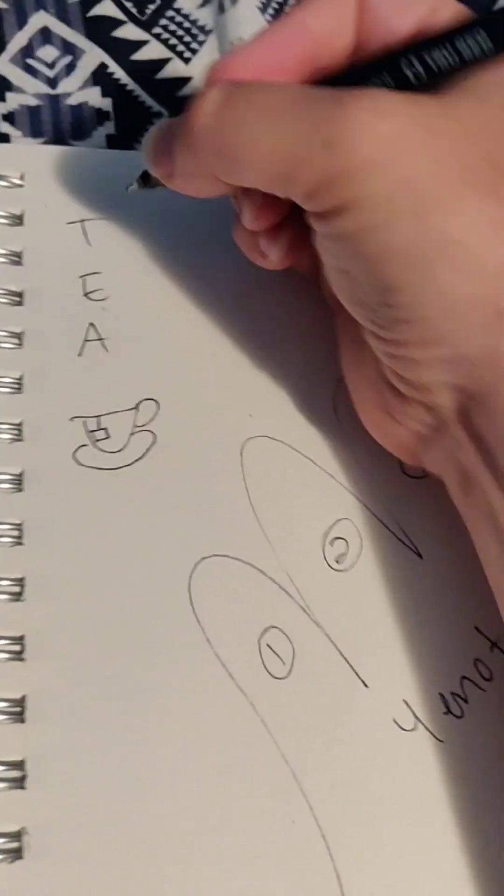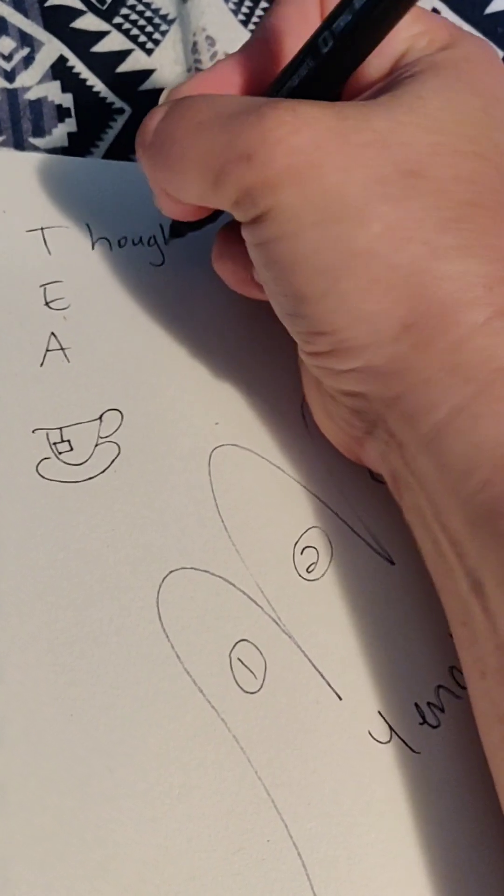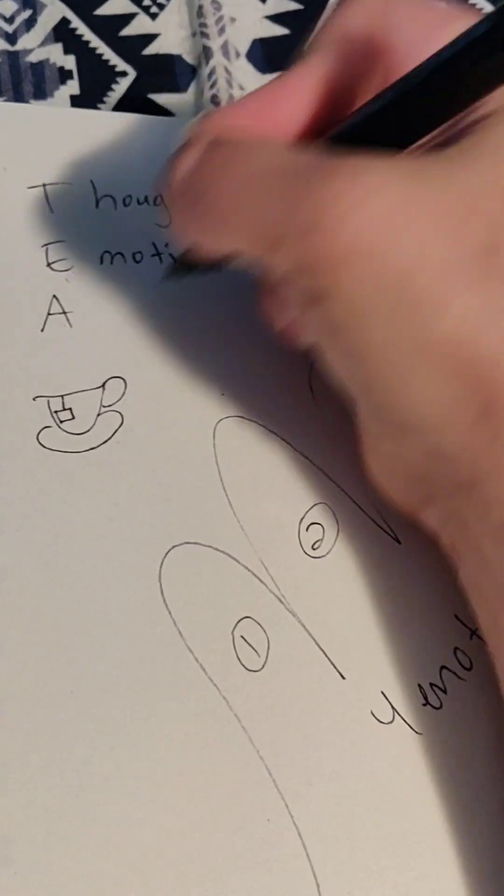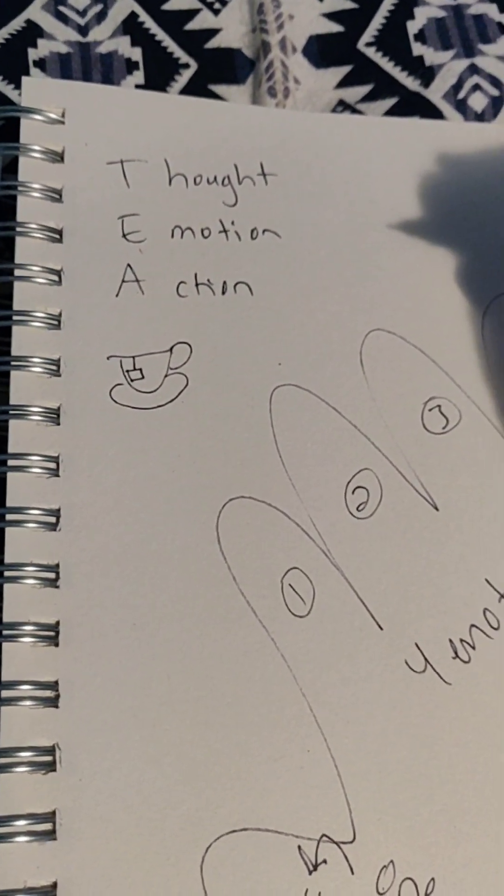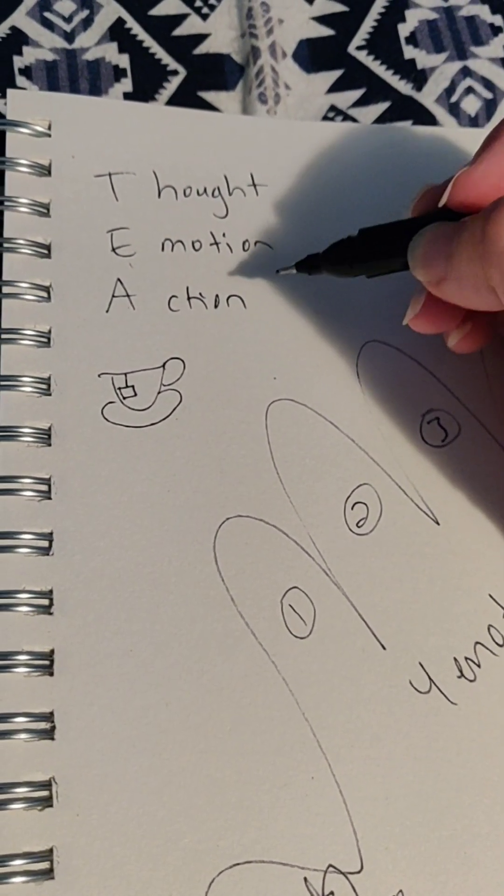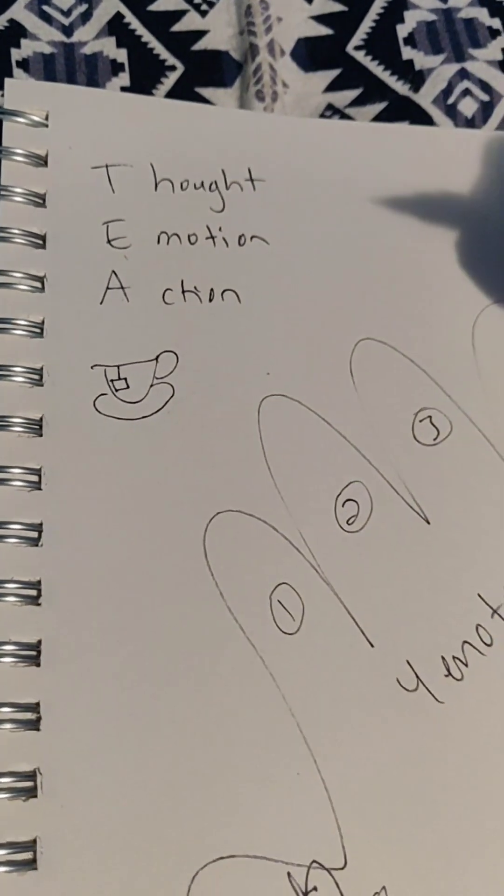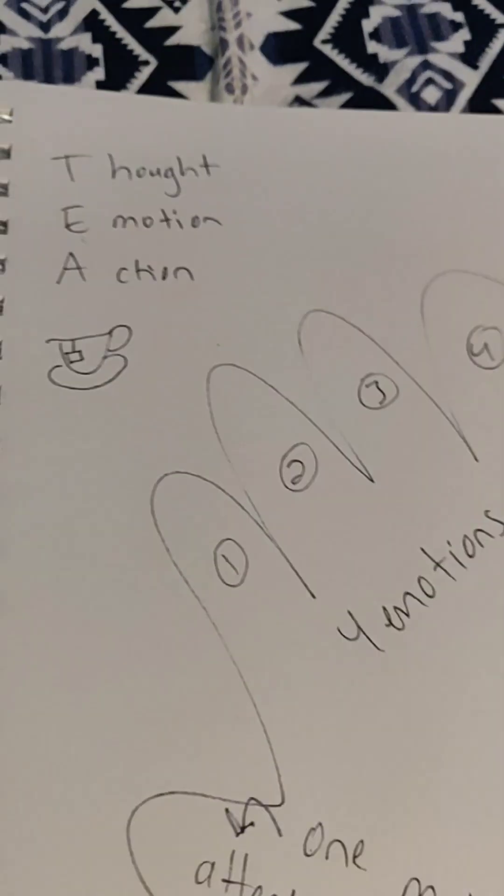So TEA is for Thought, Emotion, Action, because it's all connected. Our thoughts lead to our emotions, lead to our actions. Or sometimes it can go the other way—like your emotions to thoughts to actions.